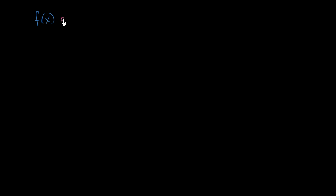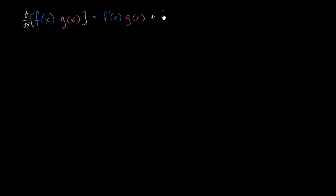We already know that the product rule tells us that if we have the product of two functions, f of x and g of x, and we want to take the derivative of this, it's going to be equal to the derivative of the first function, f prime of x, times the second function, g of x, plus the first function times the derivative of the second function. So two terms — in each term we take the derivative of one of the functions and not the other, and then we switch.